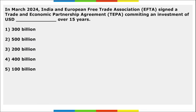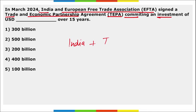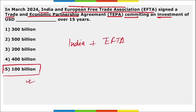India and the European Free Trade Association (EFTA) signed a Trade and Economic Partnership Agreement committing an investment of $100 billion over the next 15 years, so that trade relations between India and European nations can increase and flourish. This agreement will create almost 1 million job opportunities in India itself.